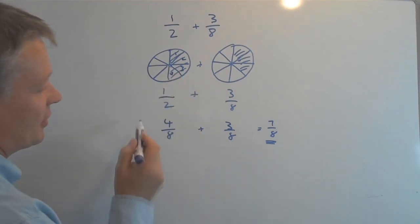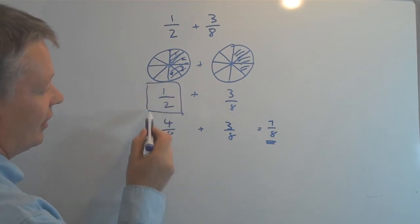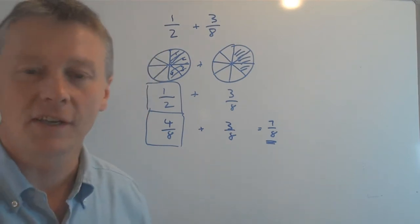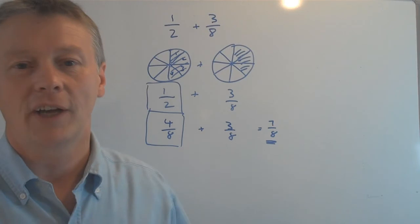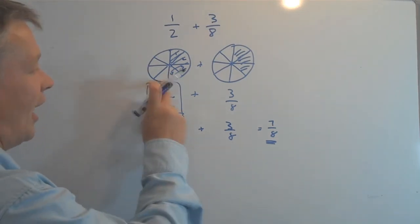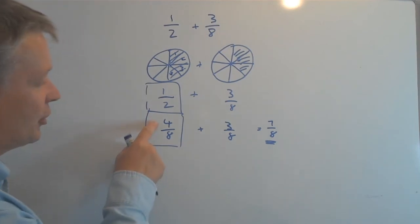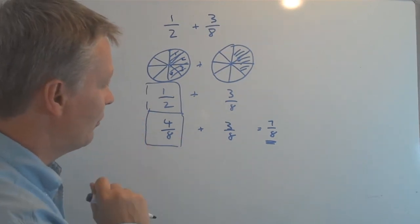From a mathematics point of view, I've changed that half to four eighths. And the way I've done that is I've used the principle of equivalent fractions. And if you have a look in some of the other videos, it will show you how we can change a fraction to a fraction that is equivalent to it, but has a different numerator, which is the number on the top, and denominator, which is the number on the bottom.